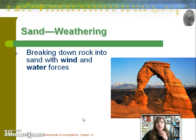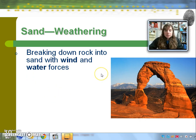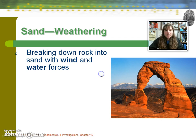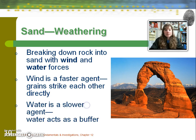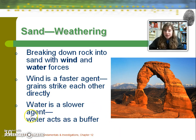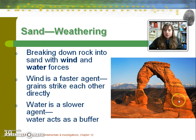Rock is broken down into sand usually by wind or water. Wind is more effective because it causes other sand particles to hit those rocks — similar to how sandpaper is more effective than water at sanding something down. Water does have a weathering and deterioration effect on rock, but it's a slower process. In fact, what was once a full rock formation has through weathering become a beautiful arch, as you can see here.